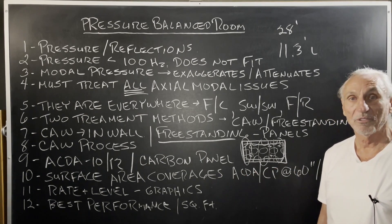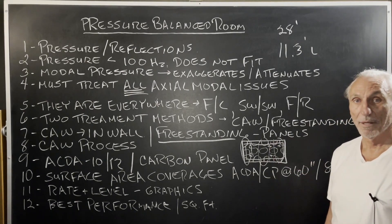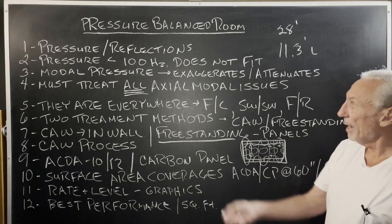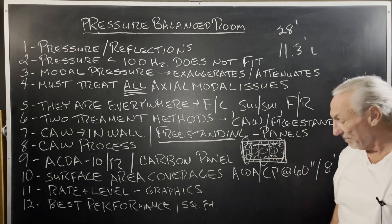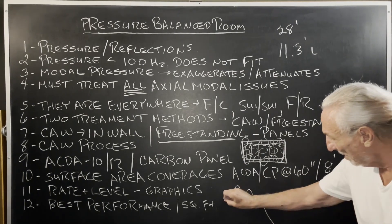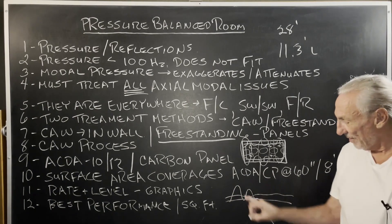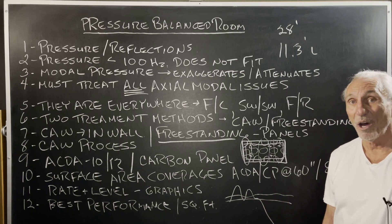We've got the most powerful technology in the world — there's just nothing close to us. Look at the performance in the graphics. The ACDA 12 is our most powerful product: 100% absorption at 50 hertz, 63% at 40 hertz, 35% at 30 hertz. Tremendous power — huge bites out of these pressure pools. We don't want axial modes. Why would we want something that exaggerates and attenuates? We're after a smooth response. We're trying to take a response with peaks and nulls and smooth it out. We don't want to hear too much, and we don't want any loss.